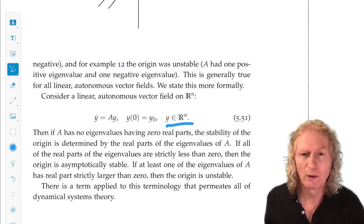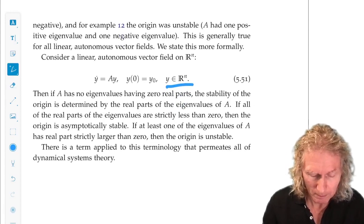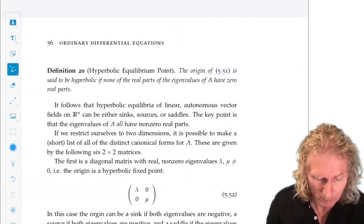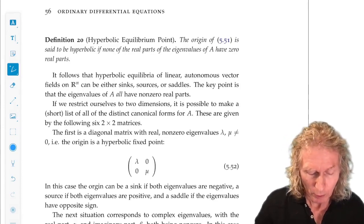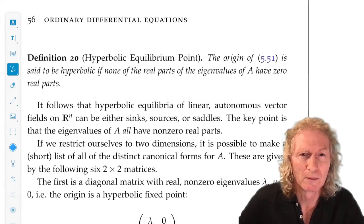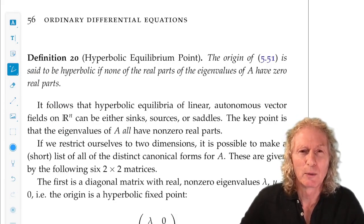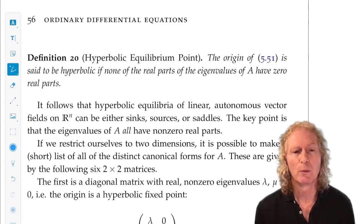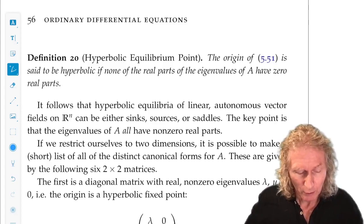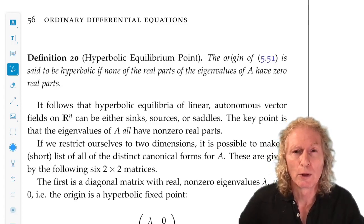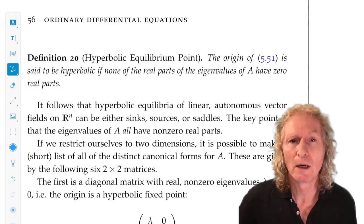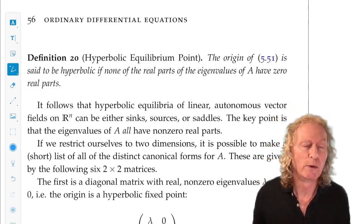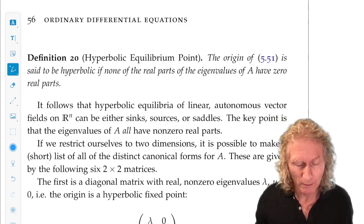Now, we have a very special terminology for this situation, the notion of hyperbolicity. That is a notion that permeates all of dynamical systems theory, and it refers to linearized behavior. It doesn't have to be about an equilibrium point. It could be about anything. For an equilibrium point, the origin is said to be hyperbolic if none of the real parts of the eigenvalues of the matrix A have zero real parts.